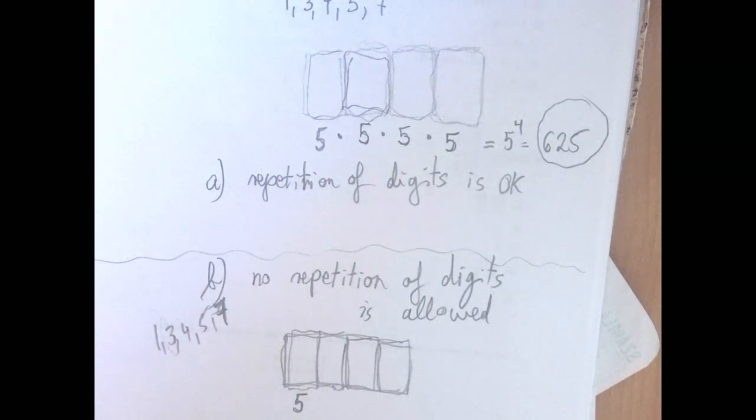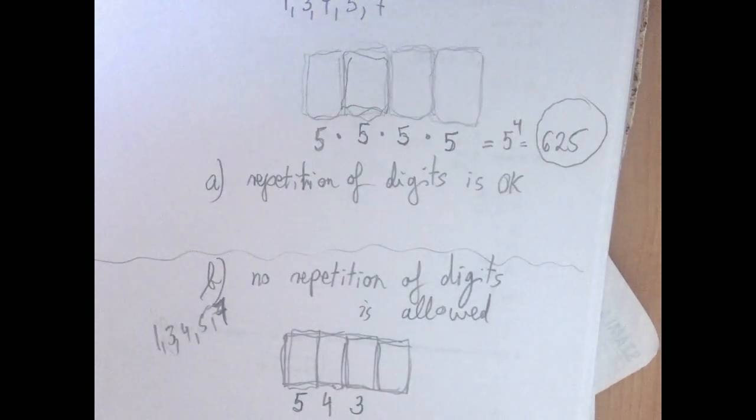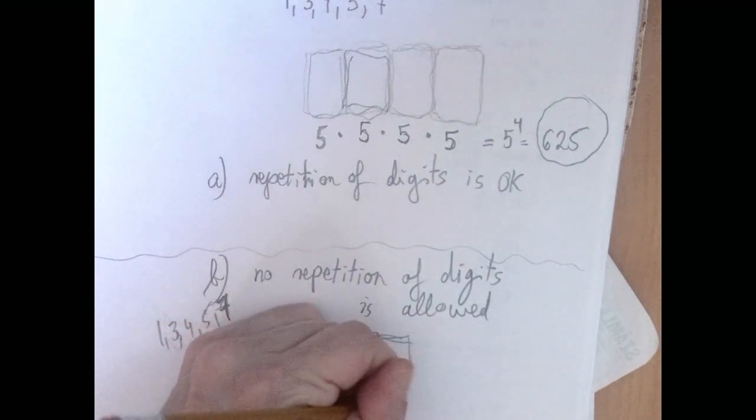So we don't have five digits to work with. We have to eliminate the one that was already used once, and that means we have four. And then we move on to the next one, and now two digits are already used, so they are not allowed. So we are down to three options to choose from. And for the last one, there is only two options.